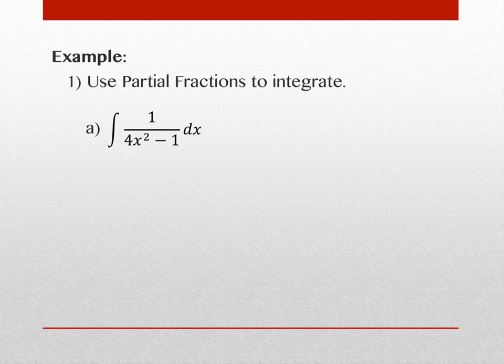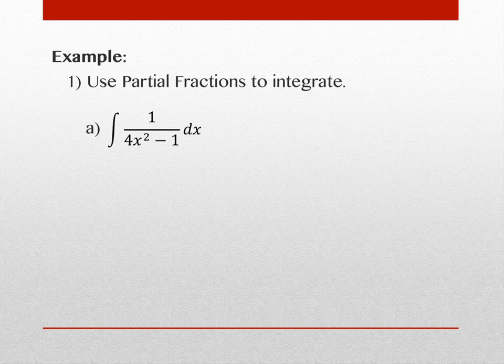If you look at other things on your anti-derivative sheet, it almost looks like an arc tangent one, but the sign's wrong — for arc tangent I would need addition between the terms, not subtraction. So we get to a place where there's not a good option we've done so far. We need another option, and that is partial fractions.